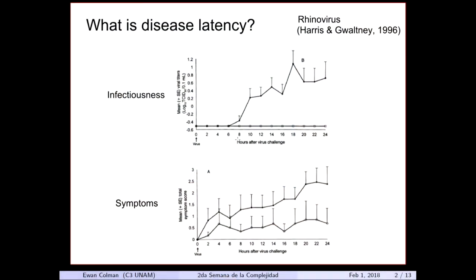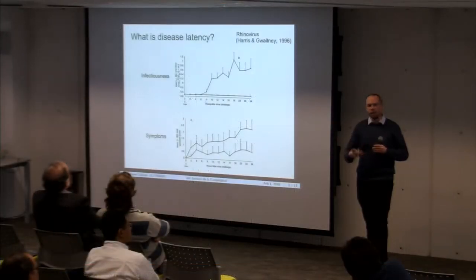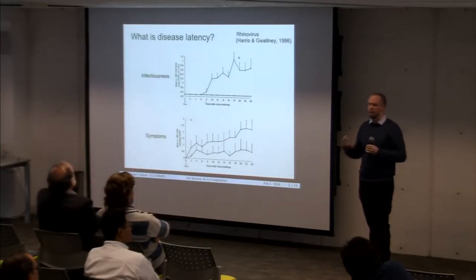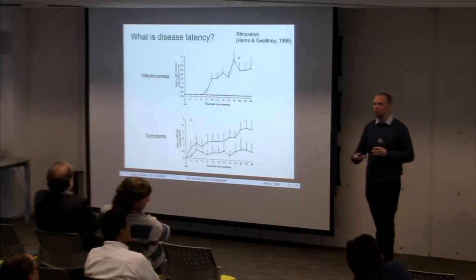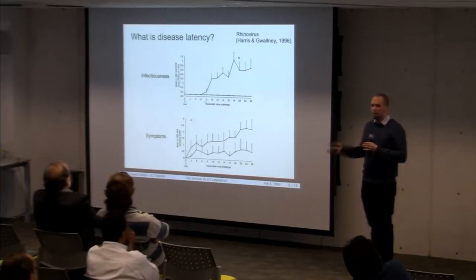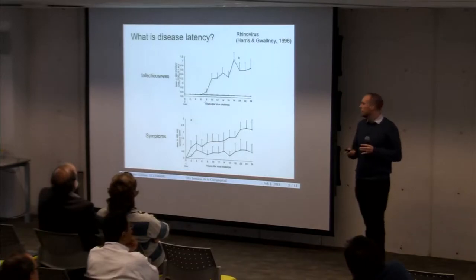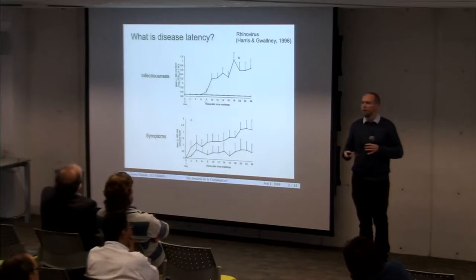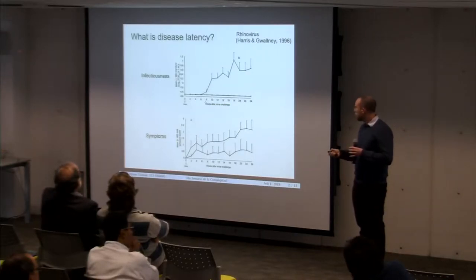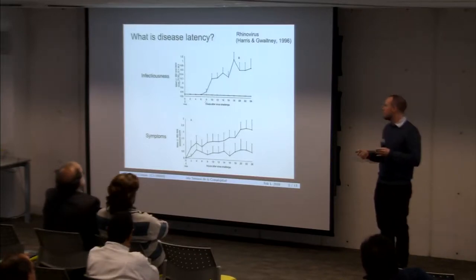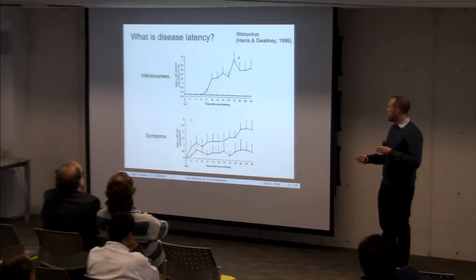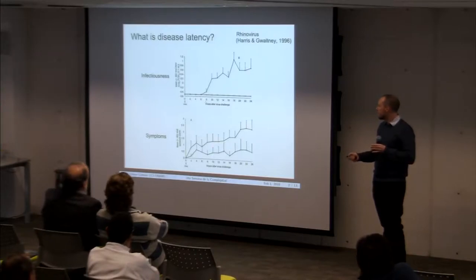There's some data from real diseases. Rhinovirus is the same thing as a common cold. People have done studies where they take volunteers into a lab, inoculate them with the disease, and then periodically take swabs from their mouth and nose to measure how much viral shedding there is. With rhinovirus, one study found that after inoculation there's a period of no viral shedding lasting six to eight hours — that's what we call the latent period. Importantly, it's not the time between becoming inoculated and showing symptoms, because symptoms start much earlier.